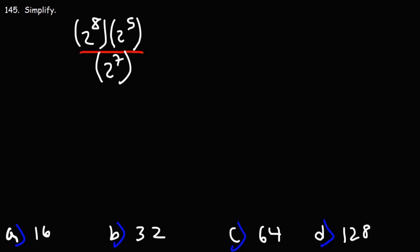Number 145, simplify. So we have 2 to the 8 times 2 to the 5 divided by 2 to the 7.